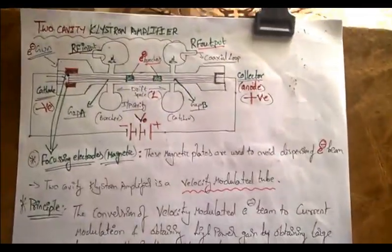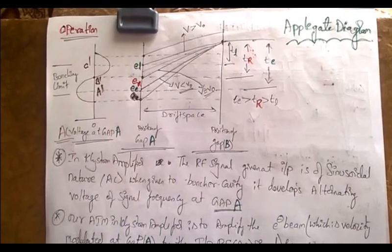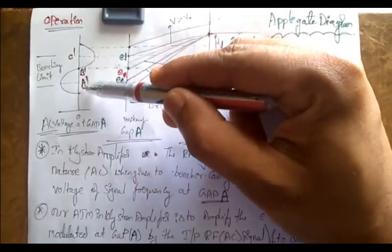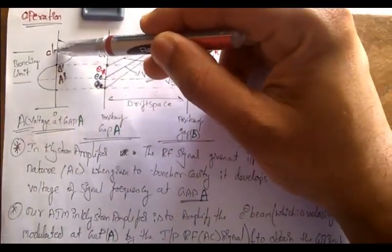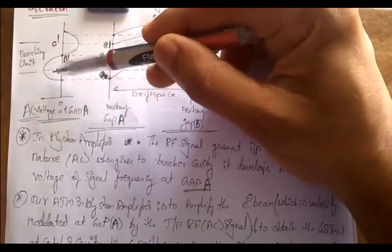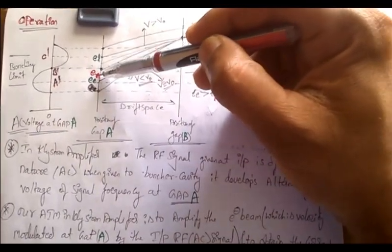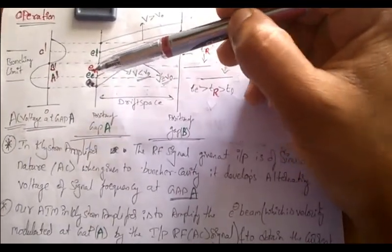Now let us see the operation of the two cavity klystron through an applicate diagram to understand what's going on. We have considered the RF input as a sinusoidal signal. We are considering three places: point A-dash, B-dash, and C-dash. At B-dash the RF AC voltage is zero, at C-dash it is at positive peak, and at A-dash it is negative.